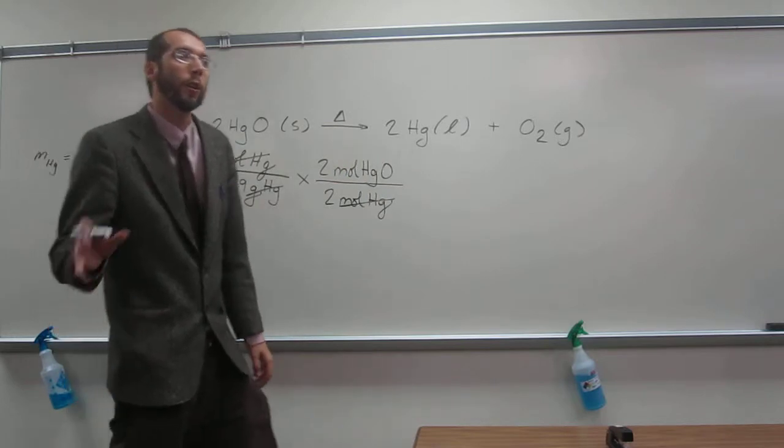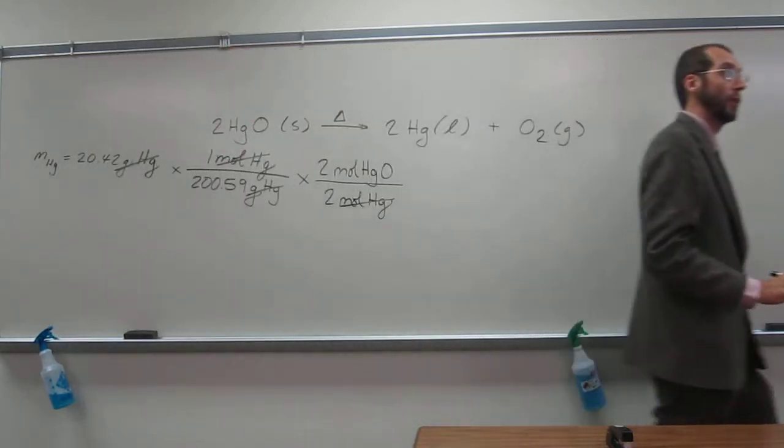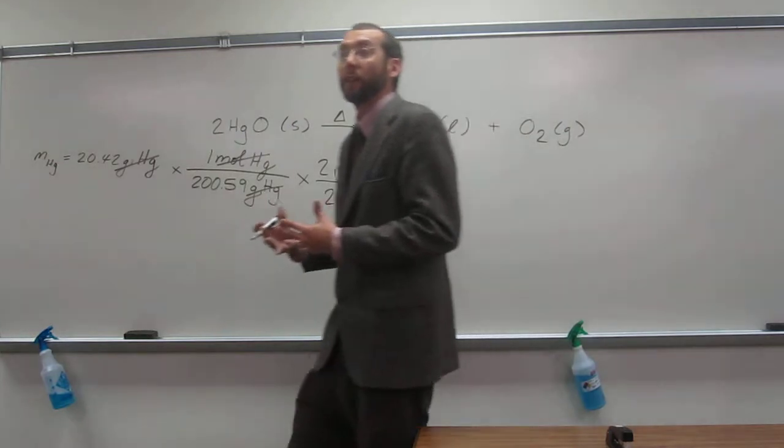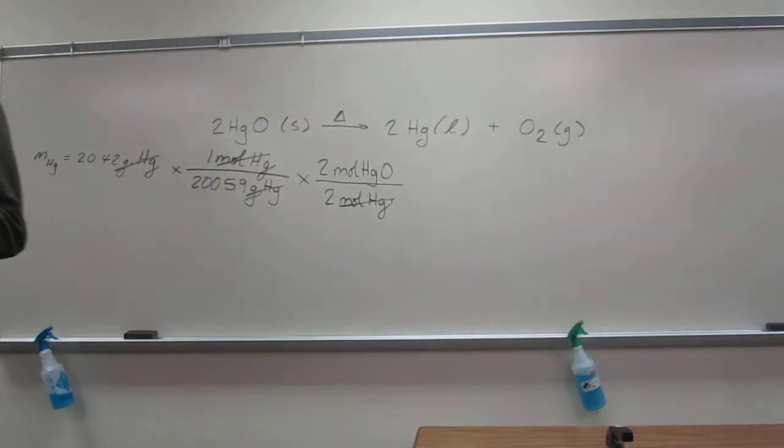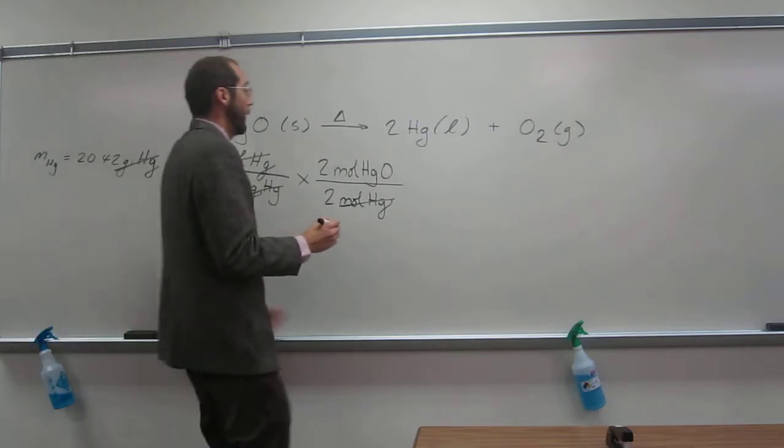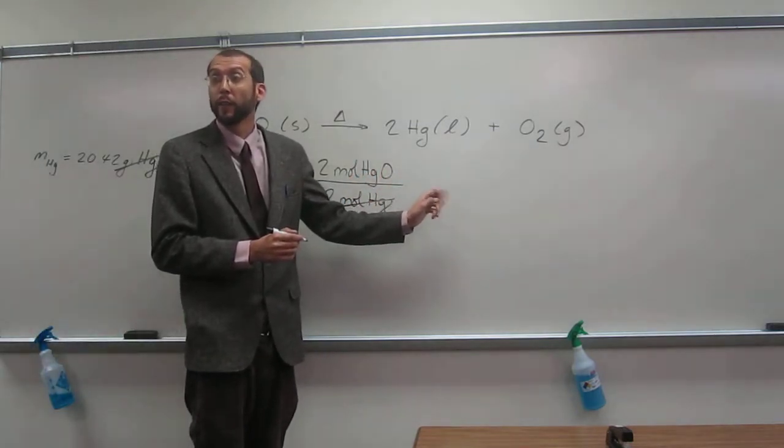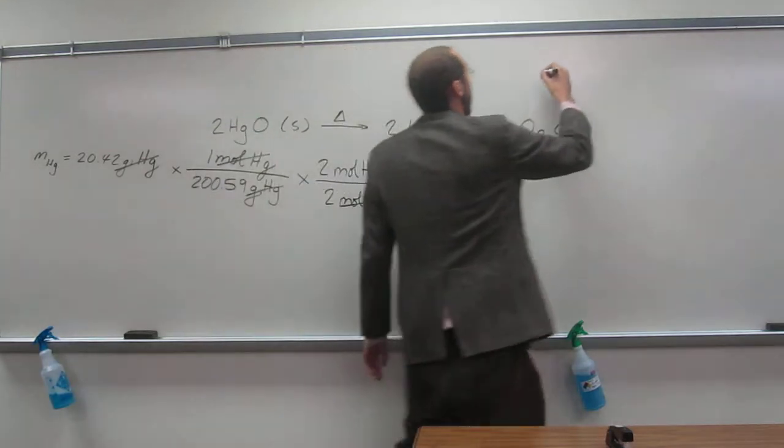Remember, we were looking for grams of mercury 2 oxide, right? We weren't looking for the number of moles of mercury 2 oxide. So I need a conversion factor that's going to change from moles to grams. What is that conversion factor called? The molar mass, okay? And specifically, it's going to be the molar mass of mercury 2 oxide, right? So how do I figure that out?